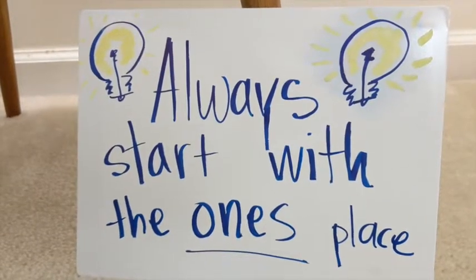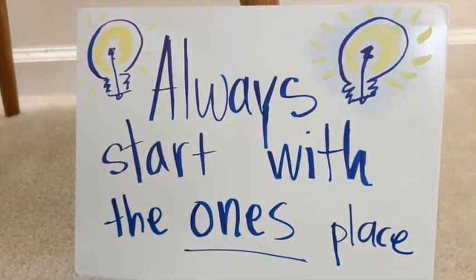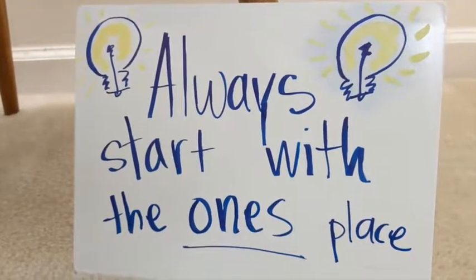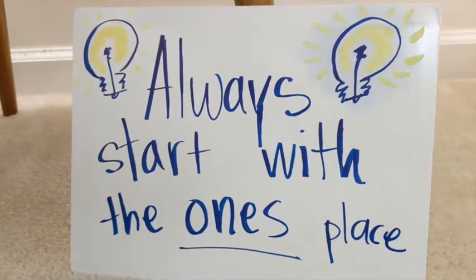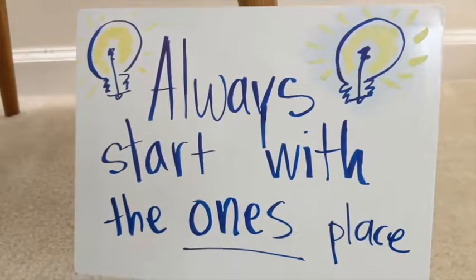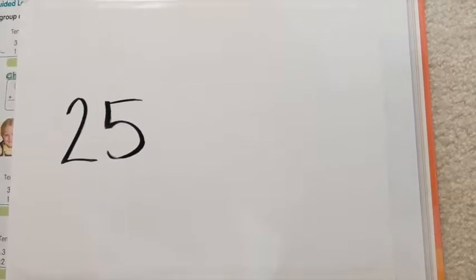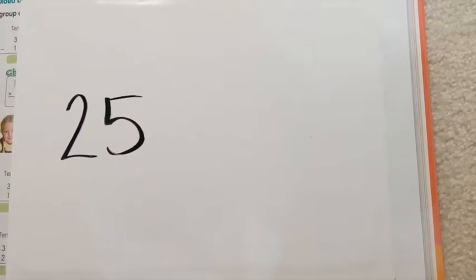Alright, today for math we are going to regroup when we subtract, just like we did in the game yesterday. Don't forget, always start with the ones place. Here's the number 25. Let's practice regrouping on paper before we start subtracting.